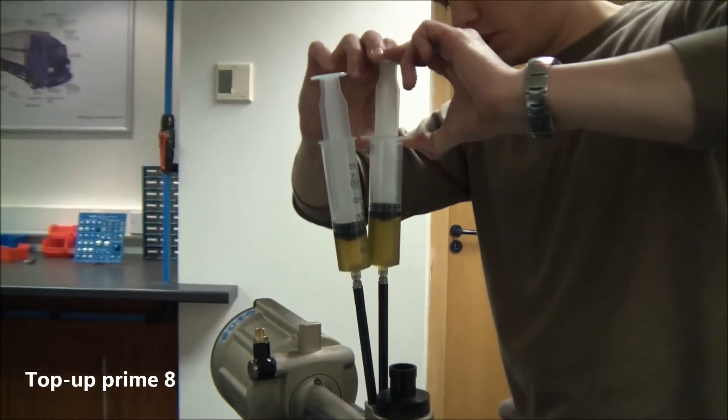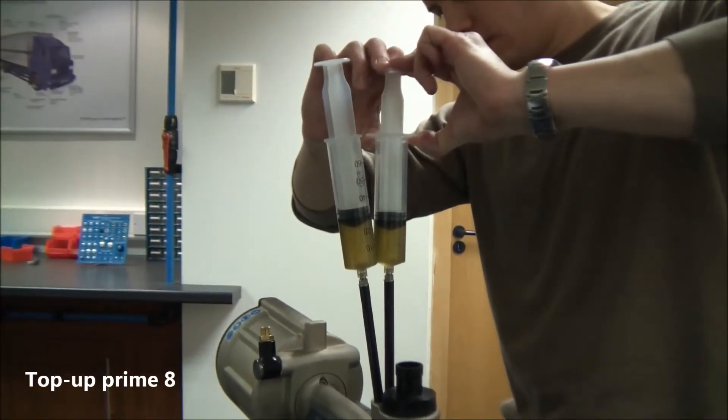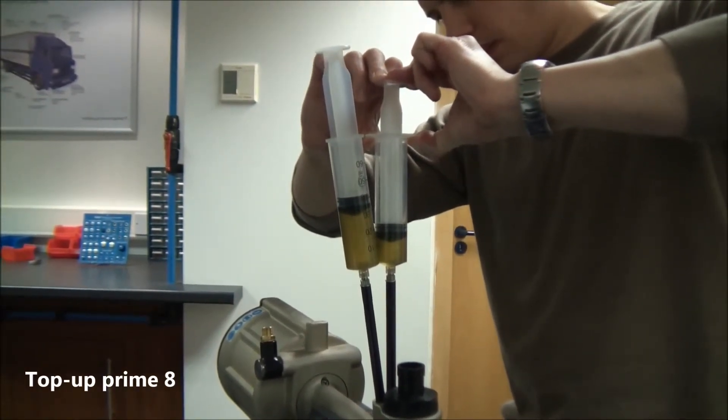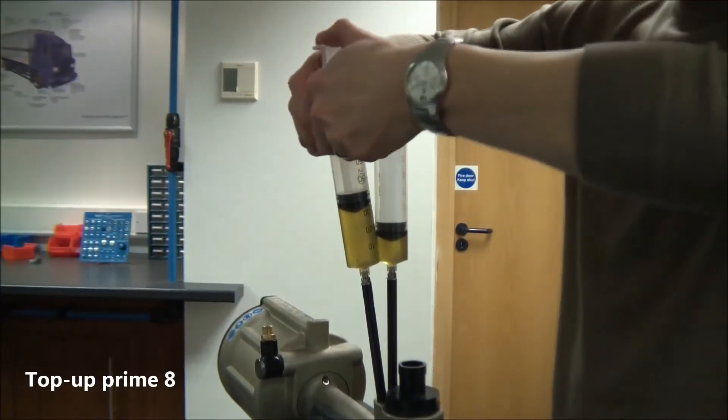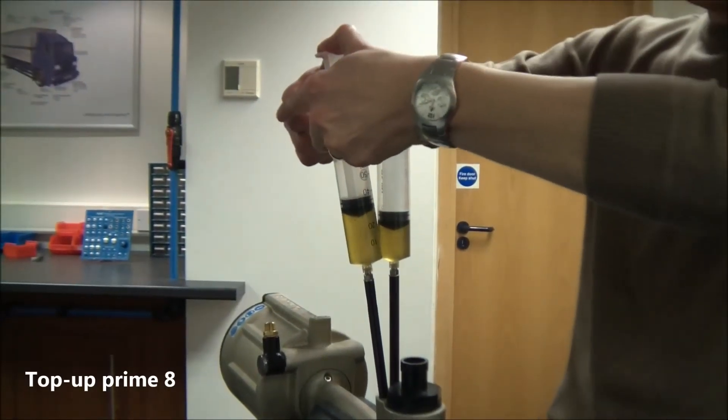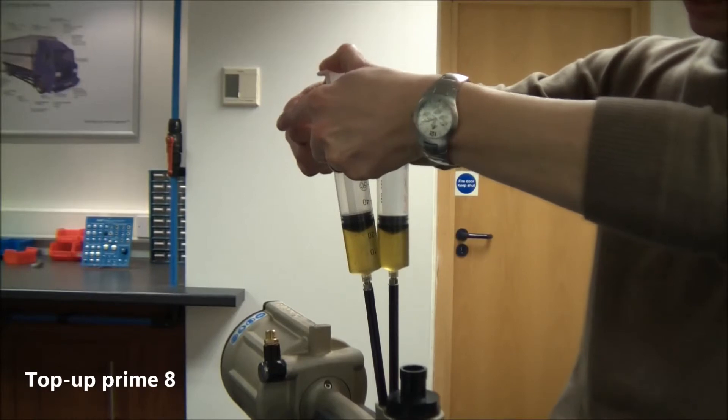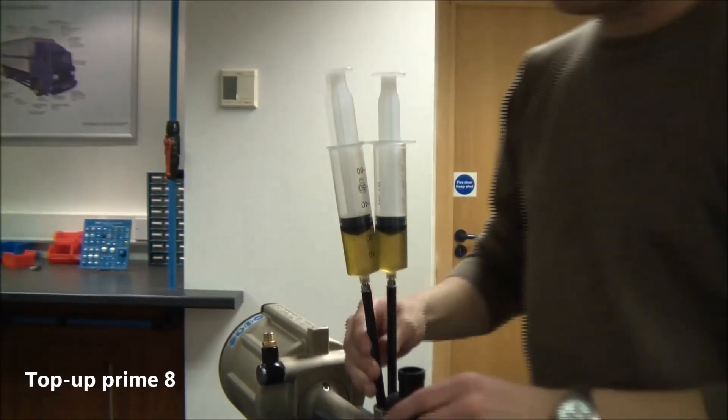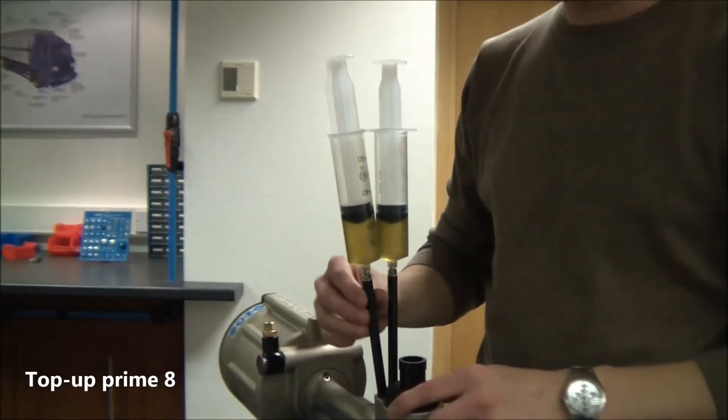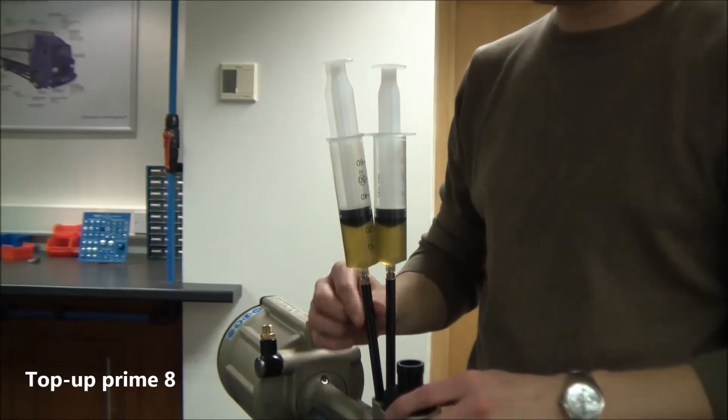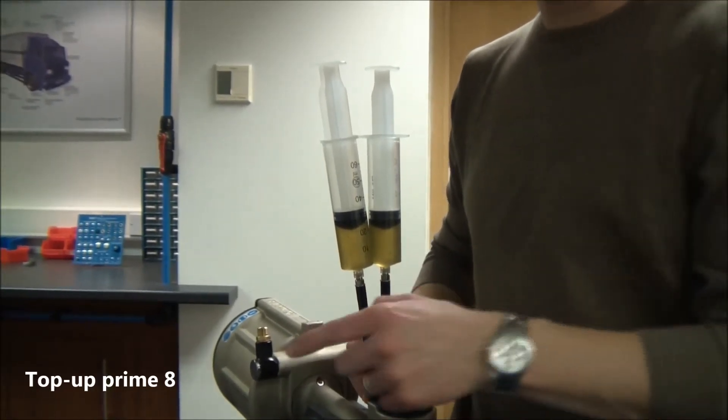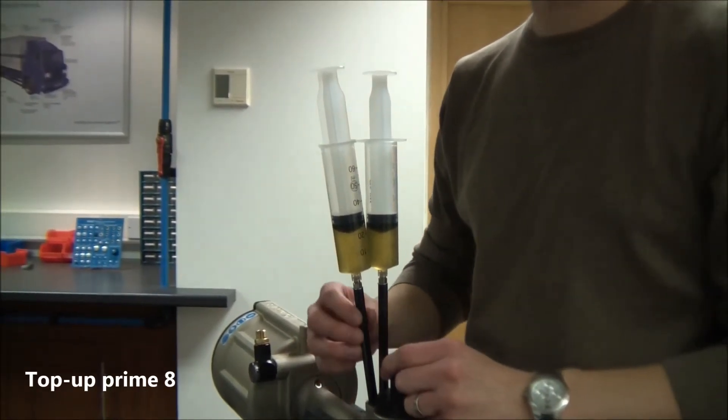Recycling the oil between the two, that looks clear. And roughly even out the volumes again between the two syringes. We're happy that the return side has enough oil in. Remove one of the syringes and reseal that port with the bleed screw and the dowty seal.